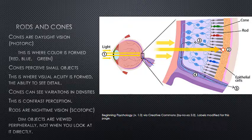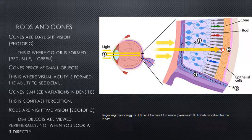Cones are called photopic vision, or daylight vision, and it is also where color is formed — red, blue, and green. Cones, unlike rods, perceive small objects, and this is visual acuity — the ability to see detail. Cones can also see variations in density, which is contrast perception.